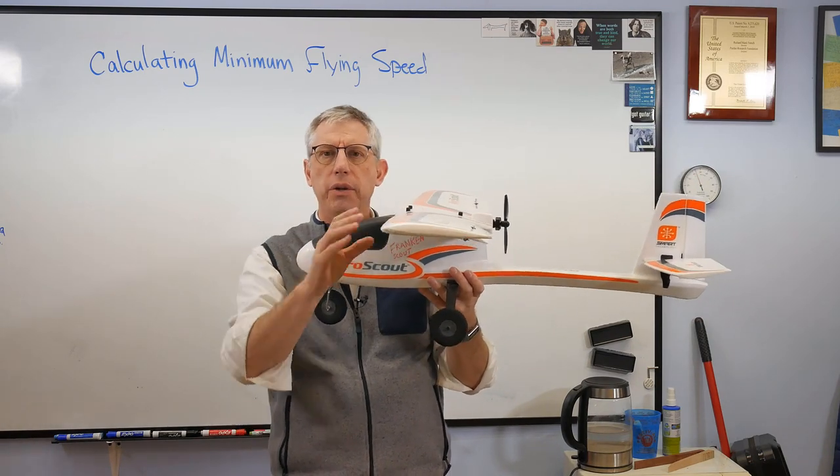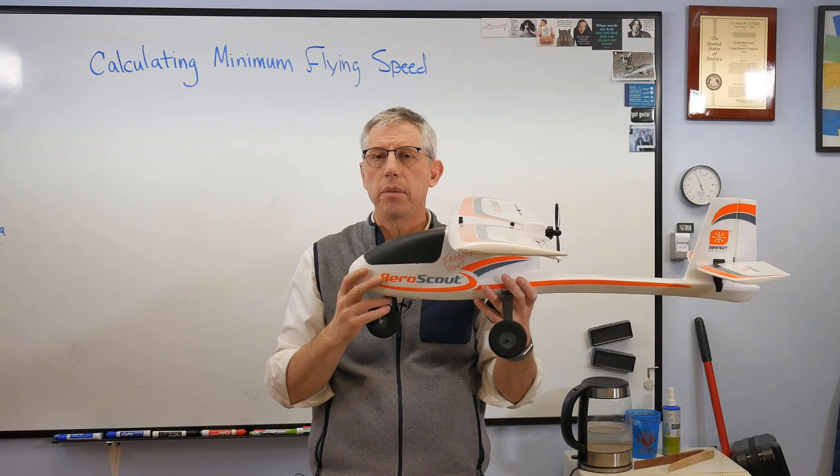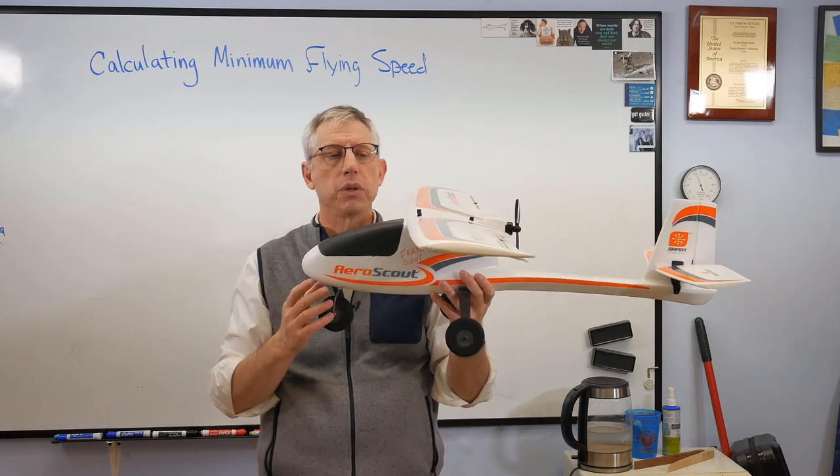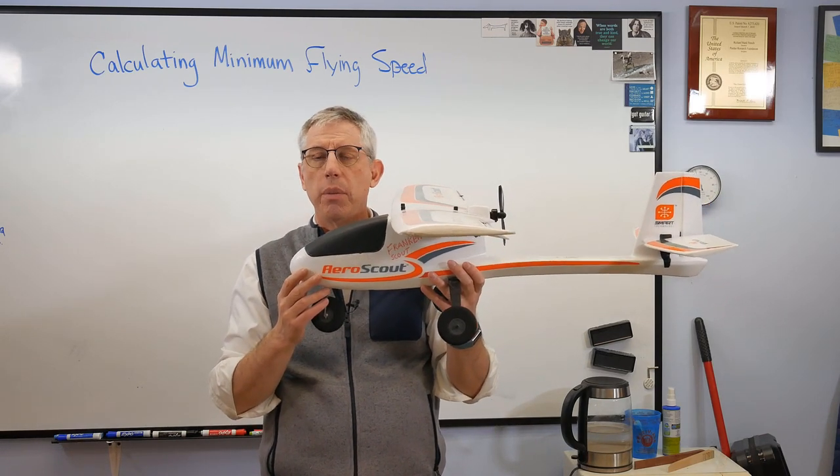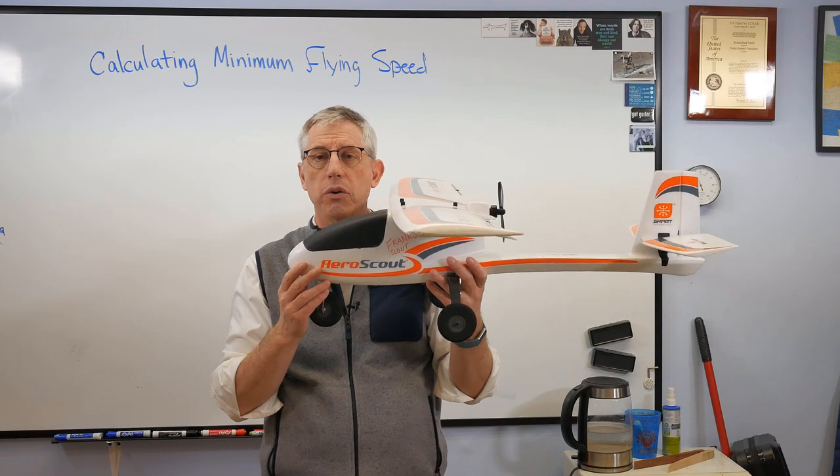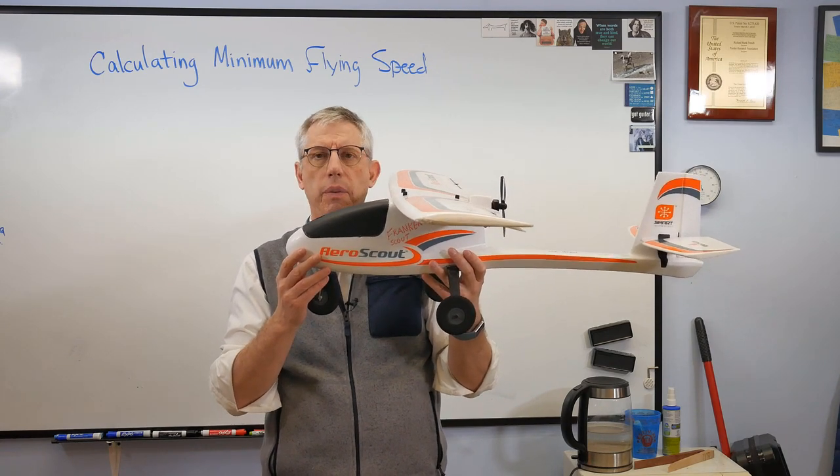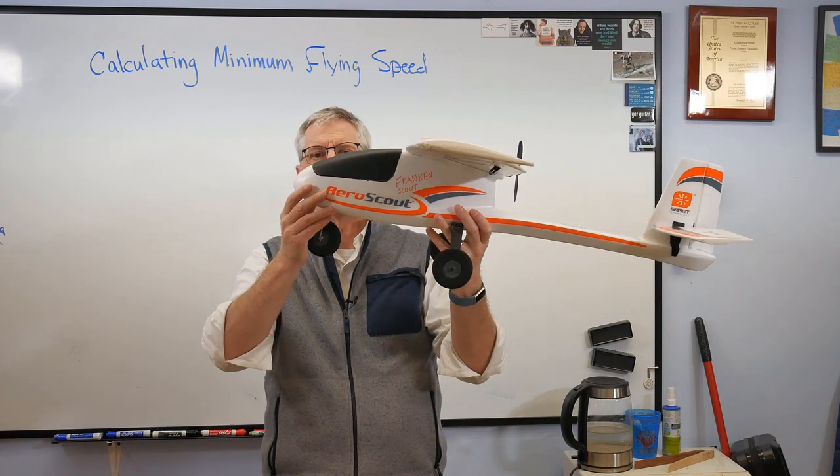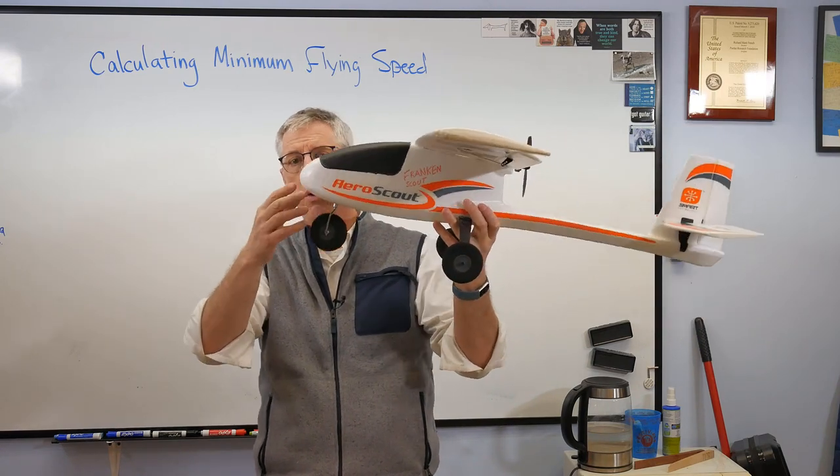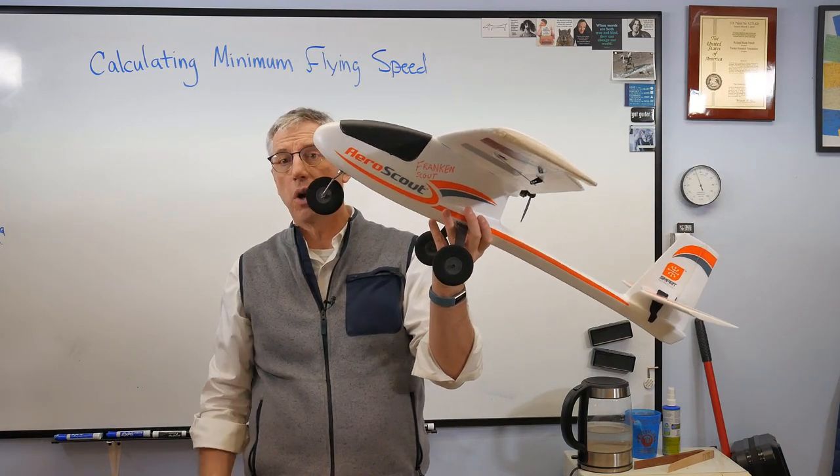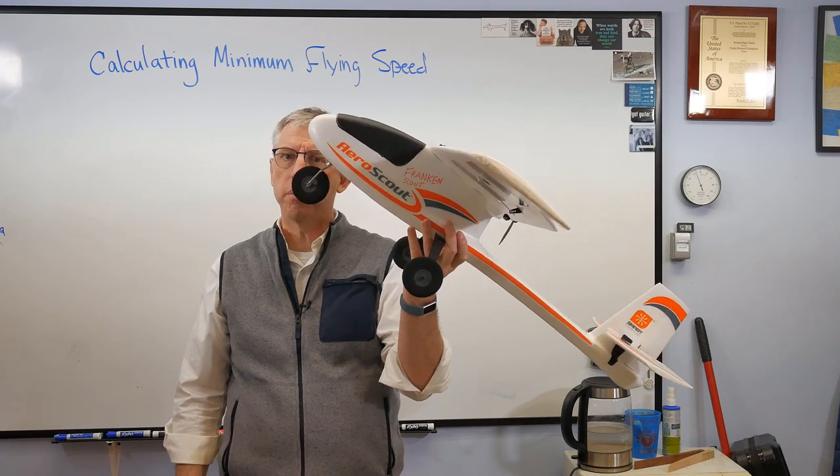The wing has something called a lift coefficient. It's a non-dimensional number, no units, that describes how much lift the wing can produce due to its shape. As the angle of attack, the angle the plane makes with the air coming in, goes up and up, the lift goes up and up, up until there's a maximum.